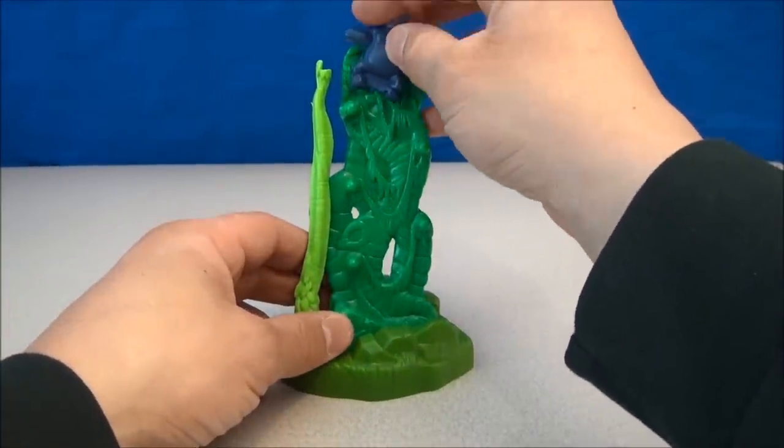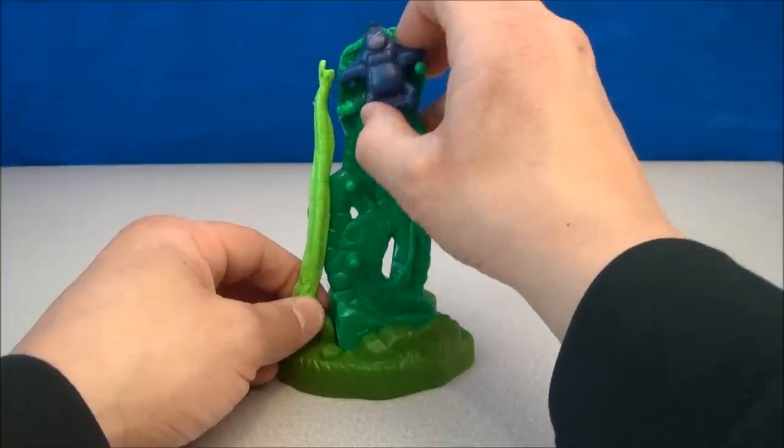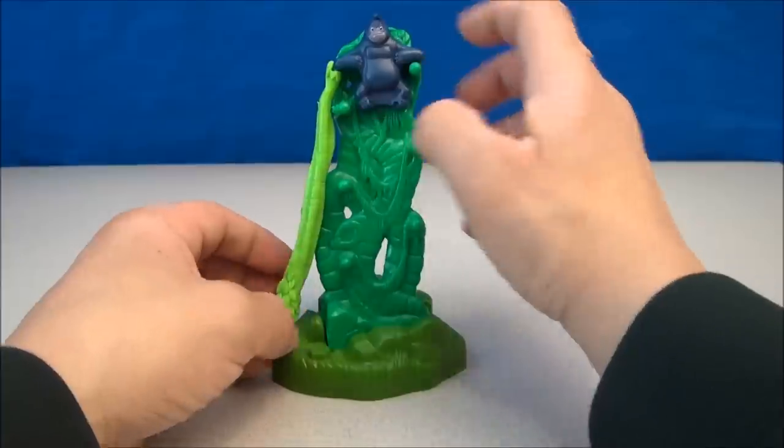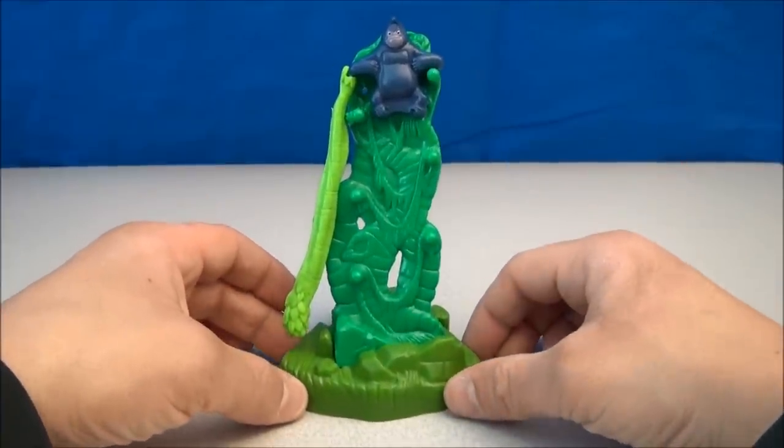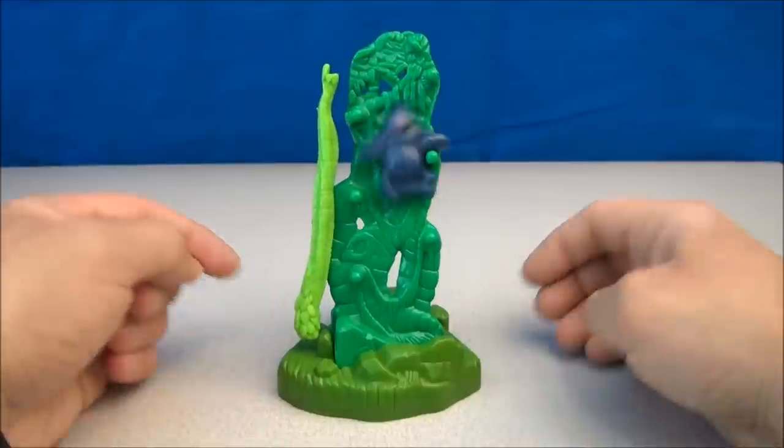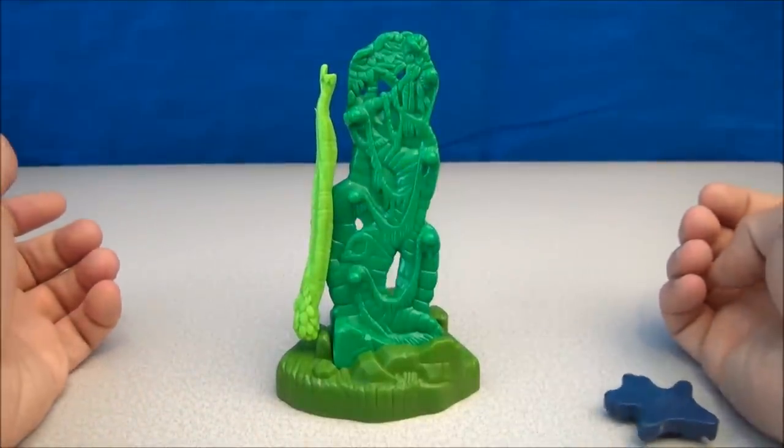What you do is you set her up here on these trees. You just kind of prop her up with this little vine. And then when you're ready for her to tumble, just give the vine a little push. How fun is that?